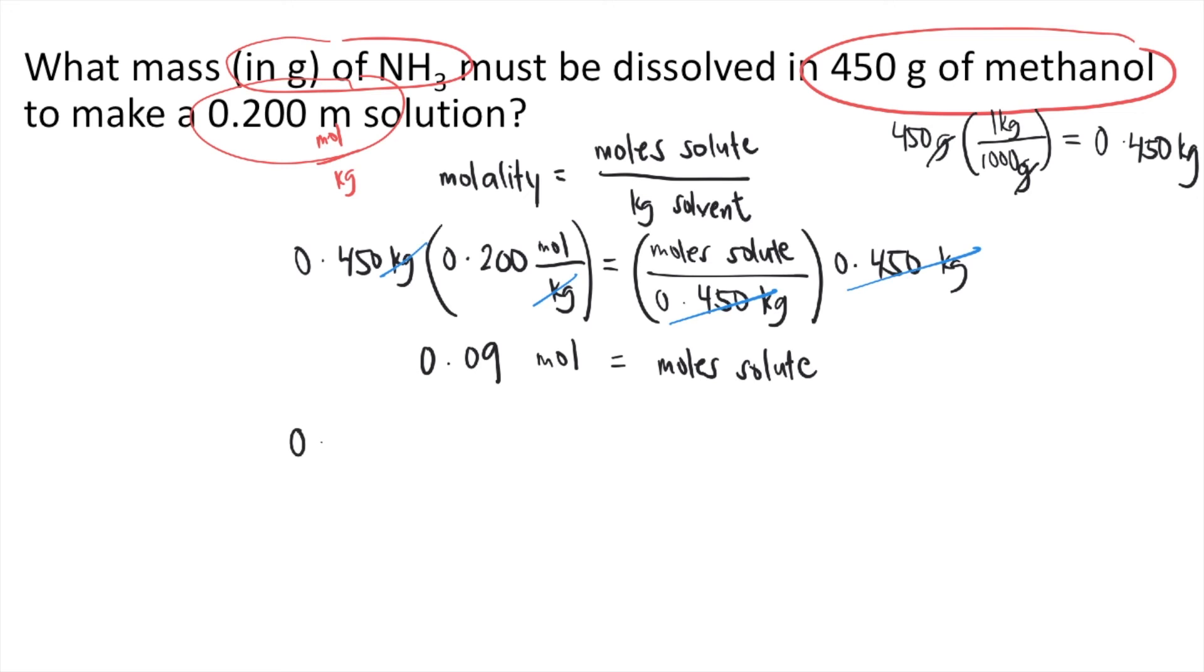So we got 0.09 moles. 1 mole of ammonia, if you solve the molar mass of ammonia, that is equal to 17.034 grams. So the moles would cancel out. So 0.09 times 17.034, that's approximately equal to 1.53 grams.